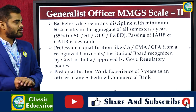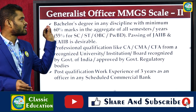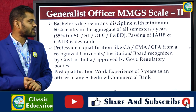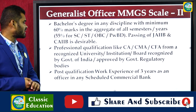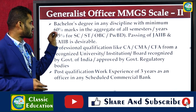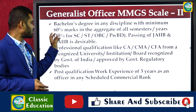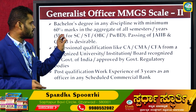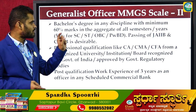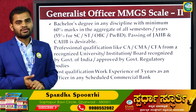Education qualification: Generalist Officer — MMGS Scale-2. You need a Bachelor's degree in any discipline with a minimum of 60% marks in aggregate of all semesters. 55% marks for SC/ST, OBC, and PWD candidates. Passing of JAIIB and CAIIB is desirable.